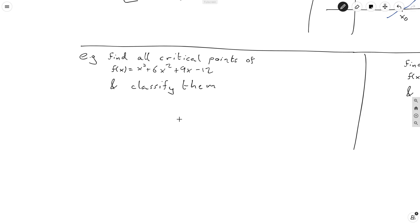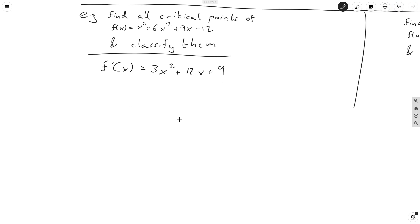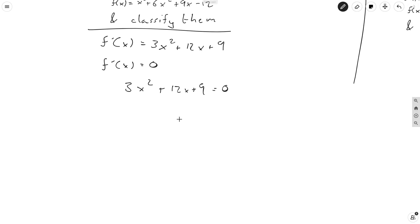So we want to find all critical points of this function. We have to compute f prime of x. The derivative of the first term is 3x squared; the second term, bring down the 2, gives 12x; the 9x term gives just plus 9; and minus 12 is of course zero. So how do we find the extrema? We set f prime of x equal to zero. So 3x squared plus 12x plus 9 equals zero, and now we employ the quadratic formula.